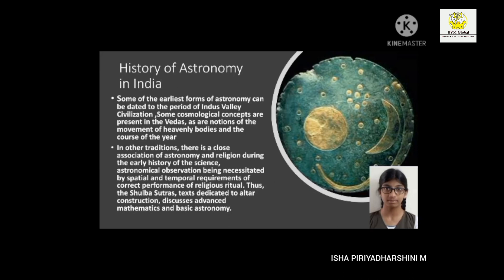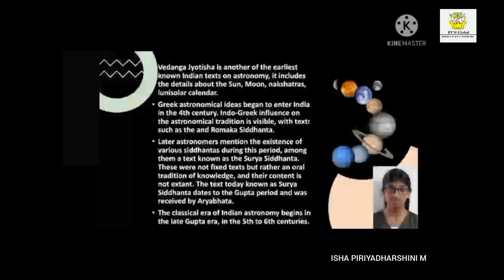Some cosmological concepts are present in the Vedas, including notations of movement of heavenly bodies, with astronomical observation necessitated by the spatial and temporal requirements of correct performance of religious ritual. The Shulba Sutras, texts dedicated to altar construction, discuss advanced mathematics and basic astronomy. Vedanga Jyotisha is another of the earliest known Indian texts on astronomy. Later astronomers mentioned various Siddhantas, among them the Surya Siddhanta, dated to the Gupta period and received by Aryabhata.